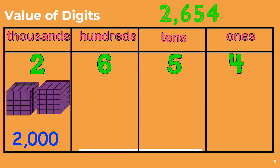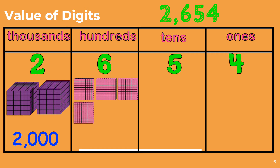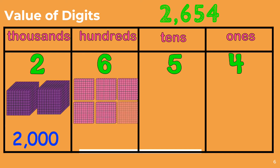The next number we are going to look at is the number 6. To determine the value, we are going to place base 10 blocks to represent the 6 in the hundreds place. We will count each of the hundreds blocks by 100 to determine the value of the 6: 100, 200, 300, 400, 500, 600. The value of the 6 is 600.